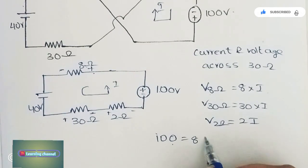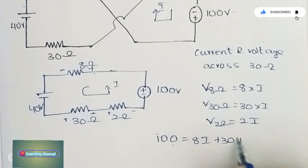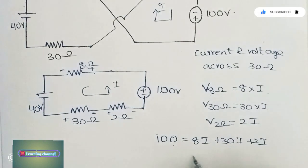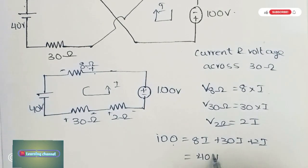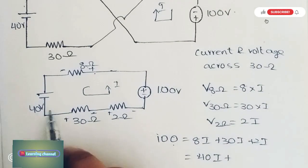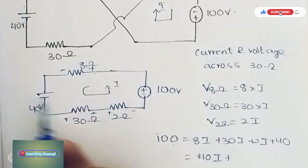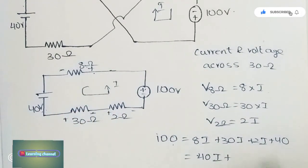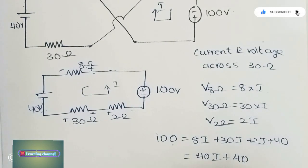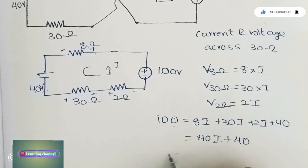The voltage equation is 100 = 8I + 30I + 2I, which equals 40I, plus one more voltage we have, 40 volts. This also flows from plus to minus, so we add 40.